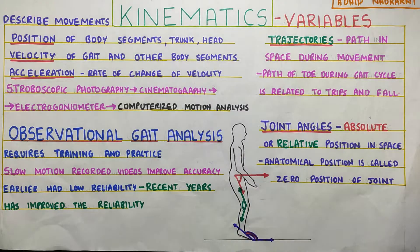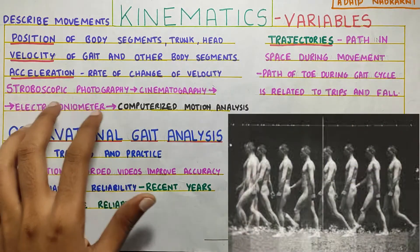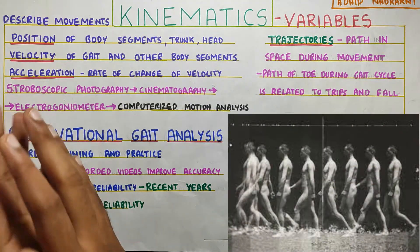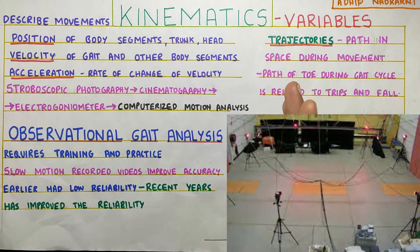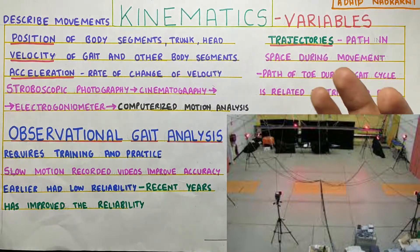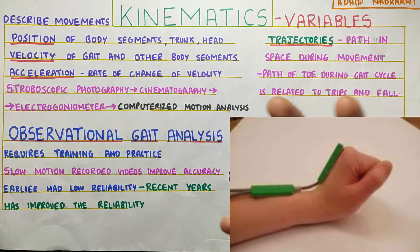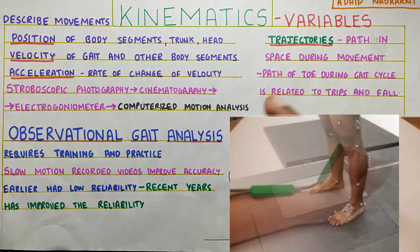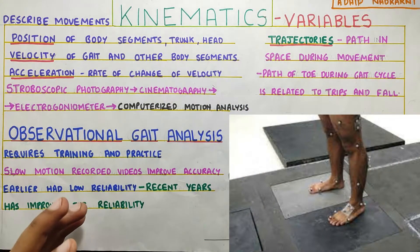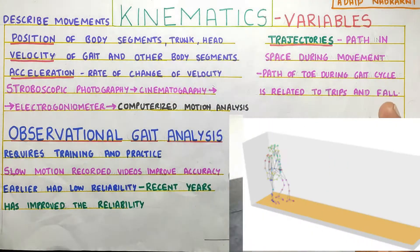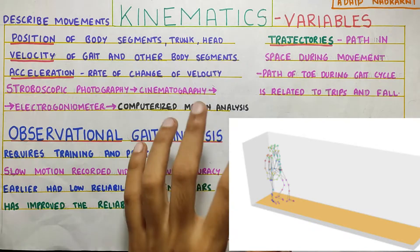So let's start with the topic. First, the analysis was earlier done with stroboscopic photography, which then moved on to cinematography, and then finally from there it went to the electrogoniometer for checking the angles. And then now finally we have the computerized motion analysis, which has a 3D view and it gives us a very holistic view of the gait.